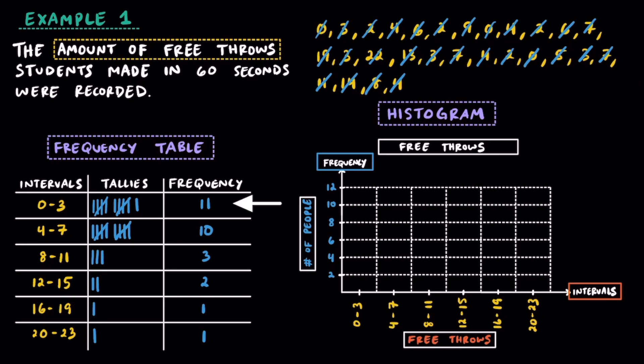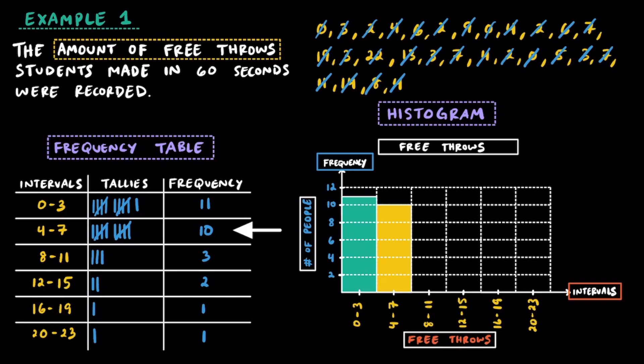11 students made between 0 and 3 free throws, so we're going to draw a bar up to 11 over that interval. There were 10 students that made between 4 and 7 free throws. There were 3 students that made between 8 and 11.